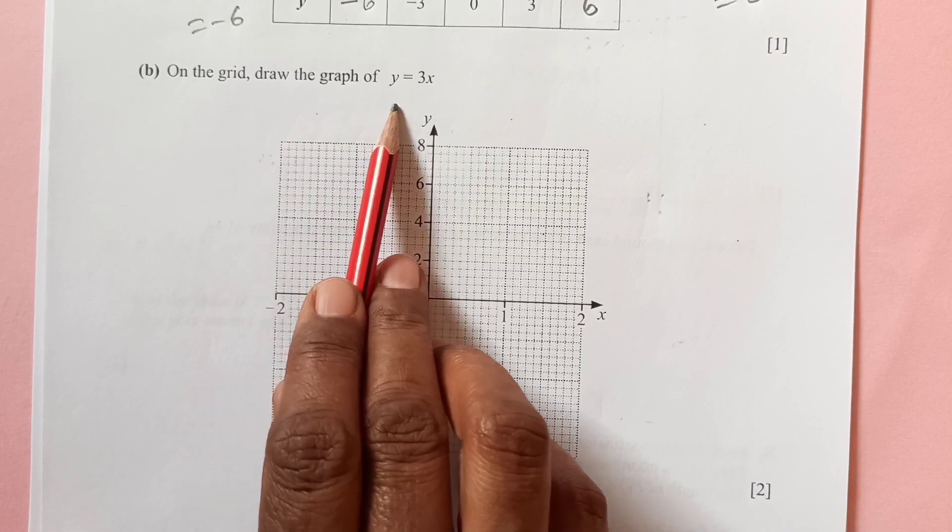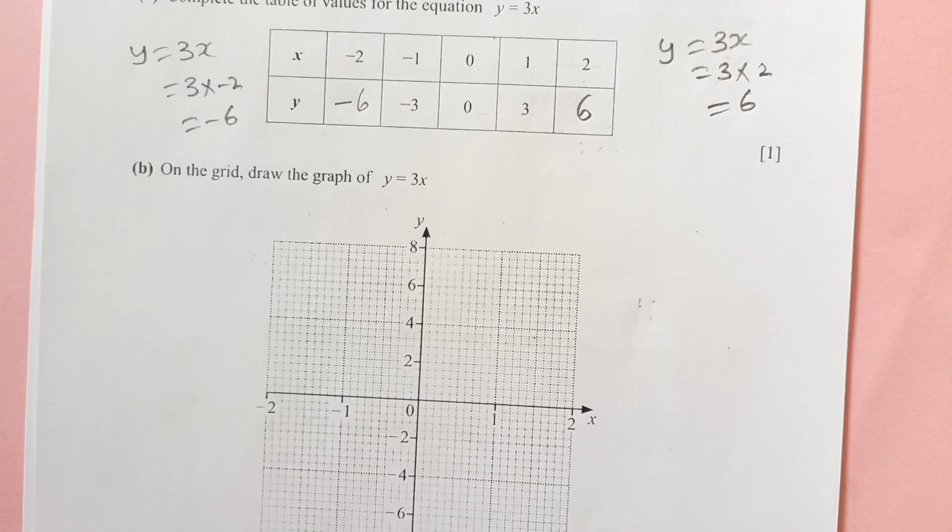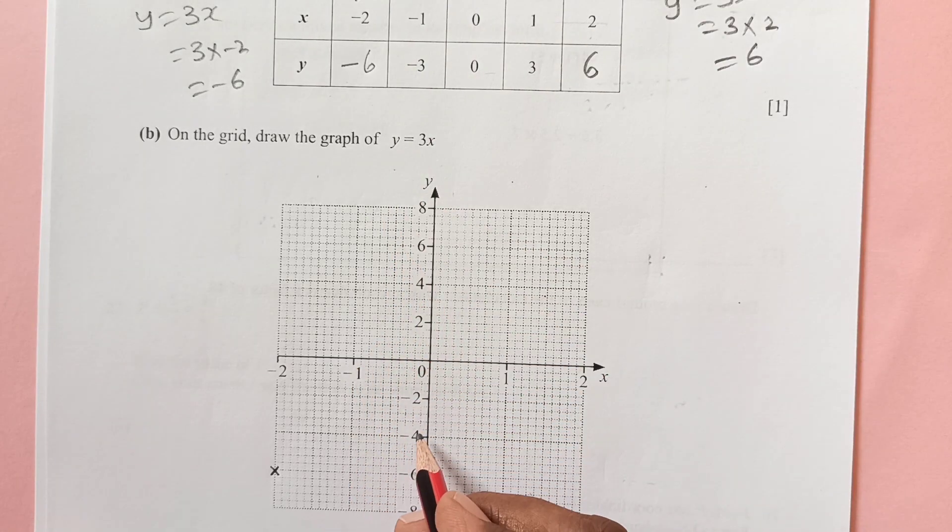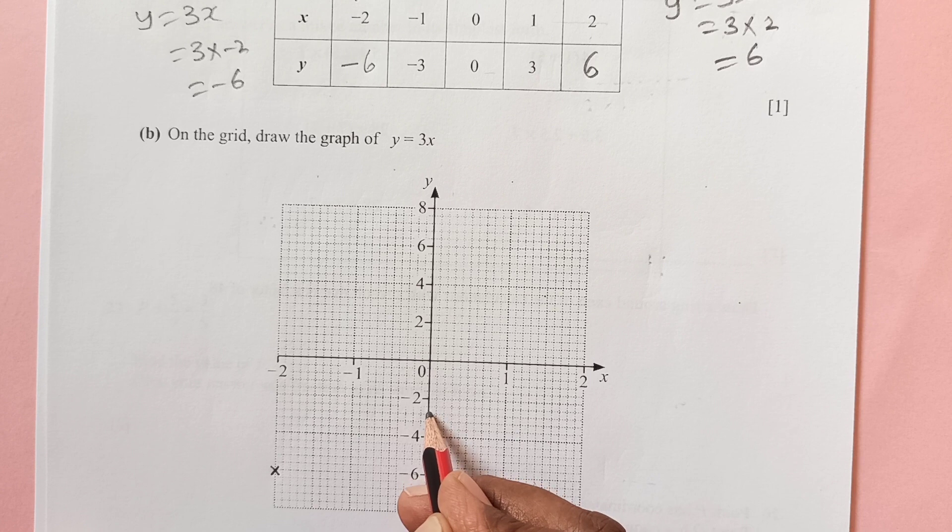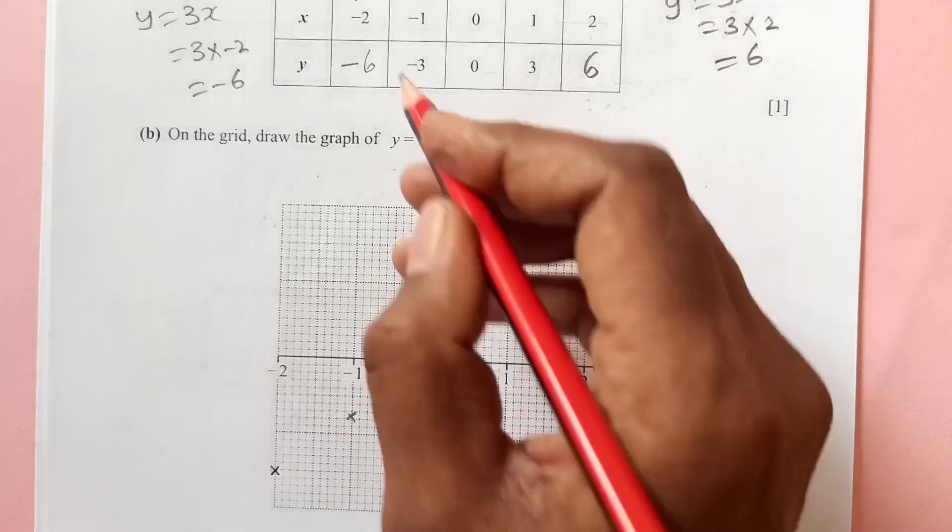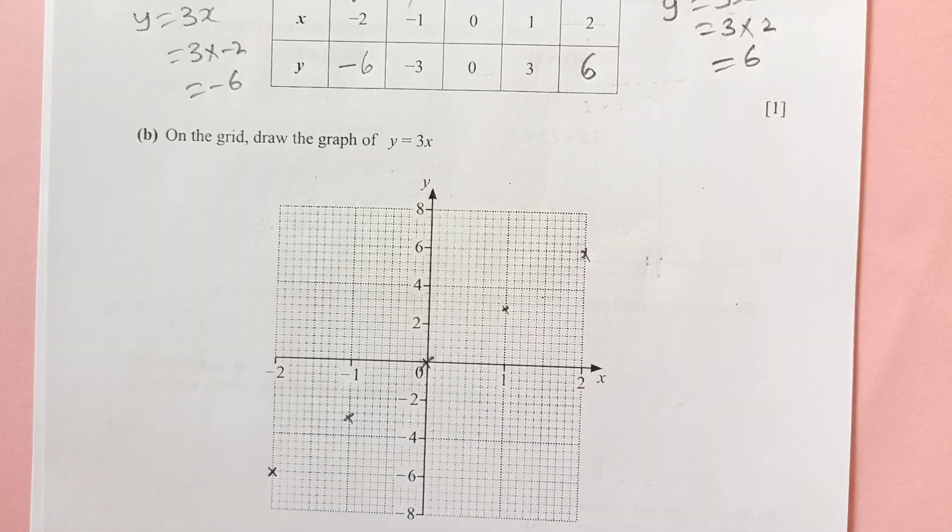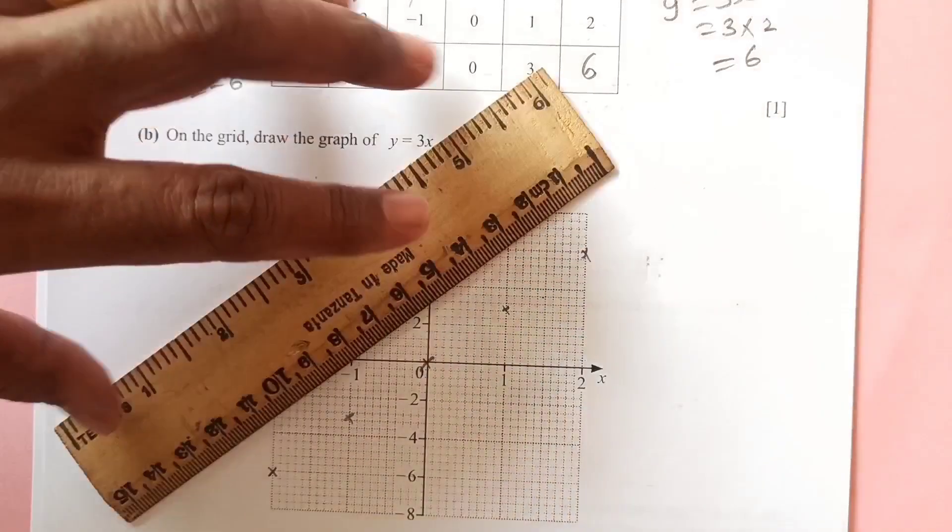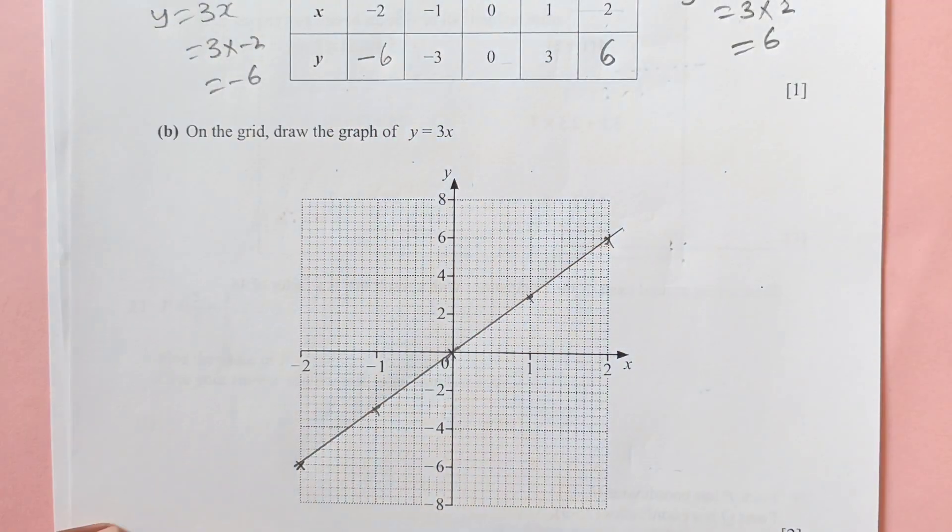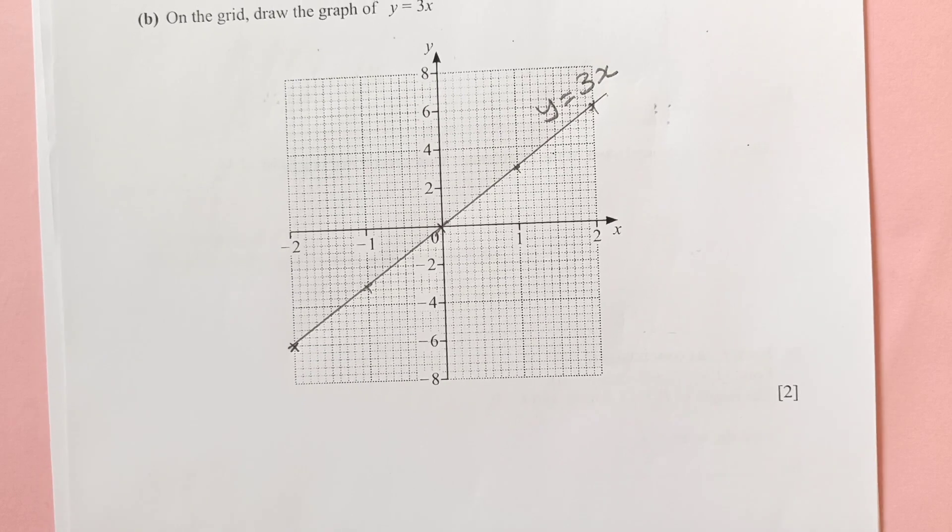Now on the grid, draw the graph of y equals 3x. This is the table of values. Now we are just going to plot them. Negative 2, negative 6 is down here. Negative 1 and negative 3 is in the middle here. 1, 3 is in the middle. 2, 6 is this point. Now just join all these points with ruler to get a straight line. Make sure that whenever it is a straight line, your all points should come on the line. If it is not coming, that means you are doing something wrong in your calculation. Then you need to recheck your values.